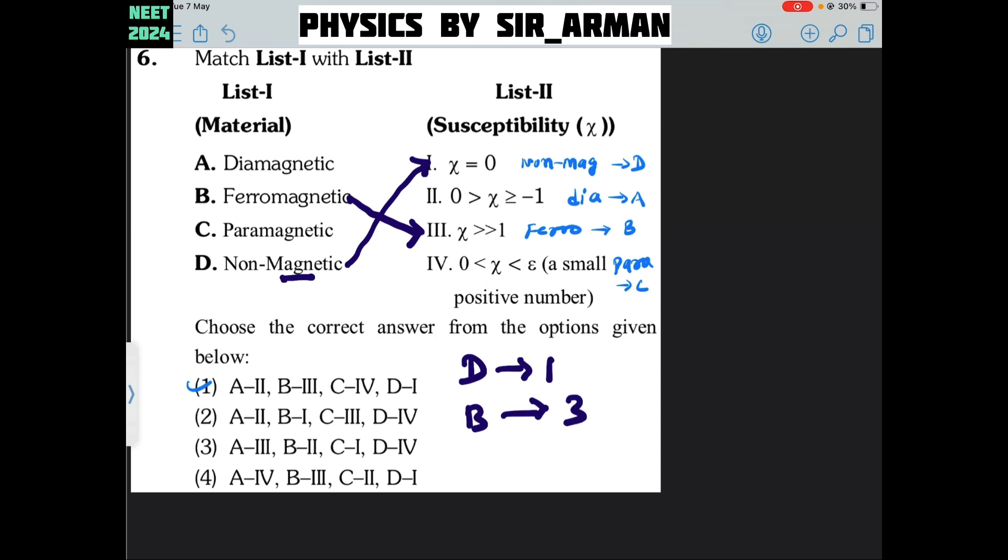Now, see if we know any 2 then we can find out the other. So where D is 1, in options 1 and 4 D is 1. Then for B you can see 3 and here also B is 3. So 1 and 4 again there is a match between 1 and 4.